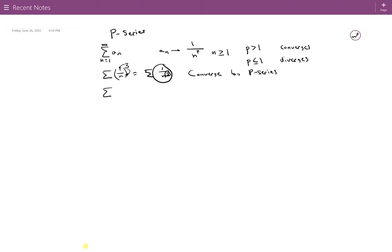We could do another example real quick. Just 1 over root n. Same thing as writing summation of 1 over n to the 1 half. Remember that 1 half is the same thing as the square root. 1 half is less than 1. Series diverges. So pretty simple.